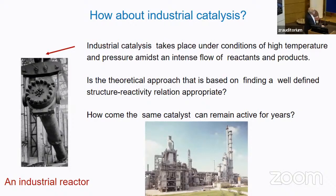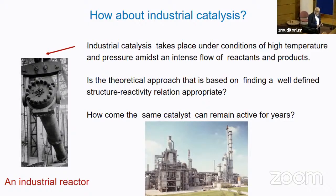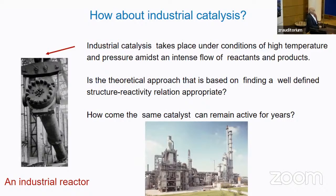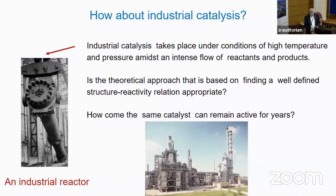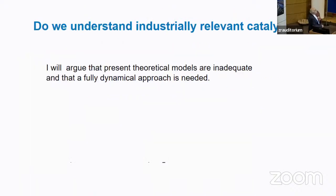One issue is that when you prepare a catalyst in the lab, after a while you have to replace it. But in many cases, that's not true for industrial reactions. The catalyst can occasionally be poisoned and you have to refresh it, but you don't have to throw everything away — it is the same catalyst. This is an example of an industrial reactor, like a bomb, because you have to shield the environment from the high pressure and high temperature. I will argue that present theoretical models are inadequate and a fully dynamical approach is needed.